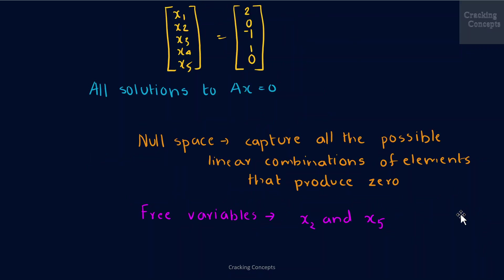From these values I derive the particular solution vector as (2, 0, minus 1, 1, 0).